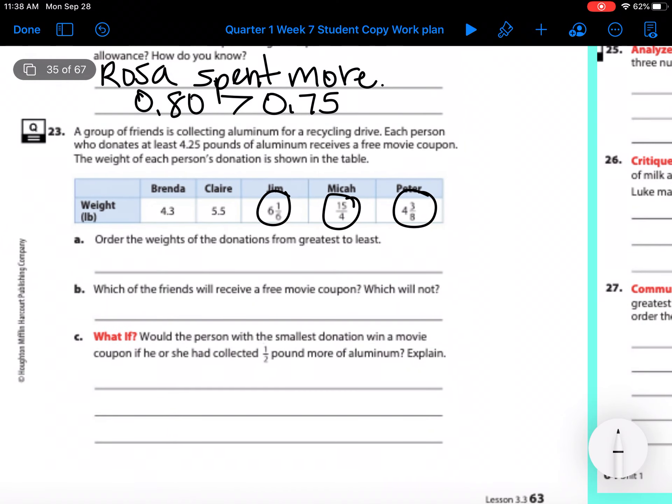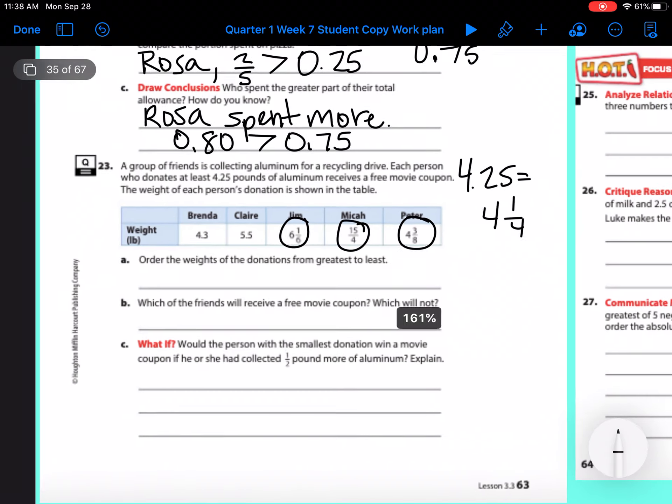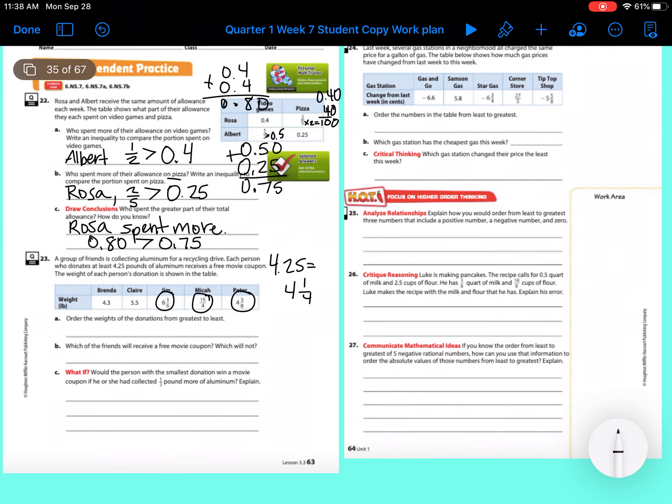Then you need to decide which of the friends will receive a free movie coupon and who won't. So who has at least 4.25? And here's a hint. 4.25 equals four and one fourth. So if they have at least four and one fourth, then they get the coupon. Would the person with the smallest donation win a movie coupon if he or she had collected one half pound more of aluminum? So you need to say yes or no and why. What would that bring their total to?